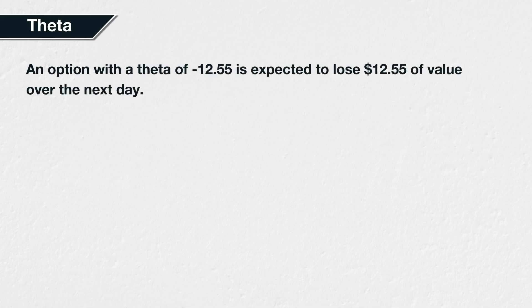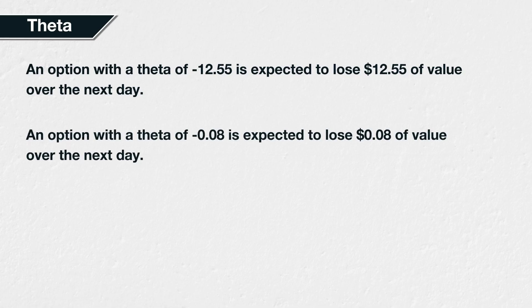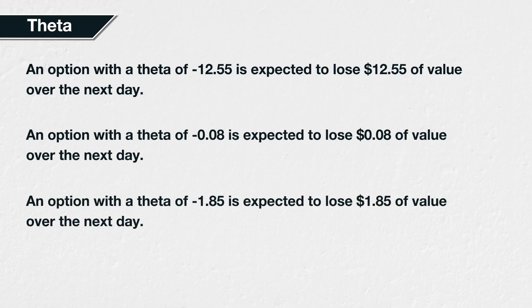Looking at some examples: an option with a theta of minus 12.55 is expected to lose $12.55 of value over the next day; an option with a theta of minus 0.08 is expected to lose 8 cents of value over the next day; and an option with a theta of minus 1.85 is expected to lose $1.85 over the next day. Assuming all other things remain equal, any trader who is long these options is currently losing value at the rate specified by the theta per 24 hours, while any trader who is short those same options is currently gaining value at that rate. There is no extra transaction in the trader's account for theta — it is simply reflected in the option's price over time.